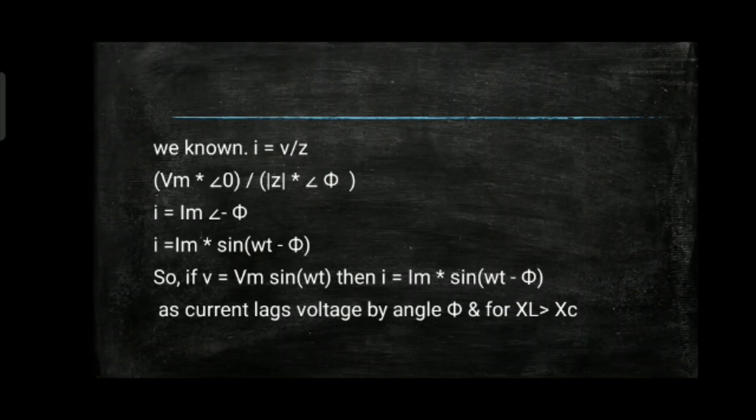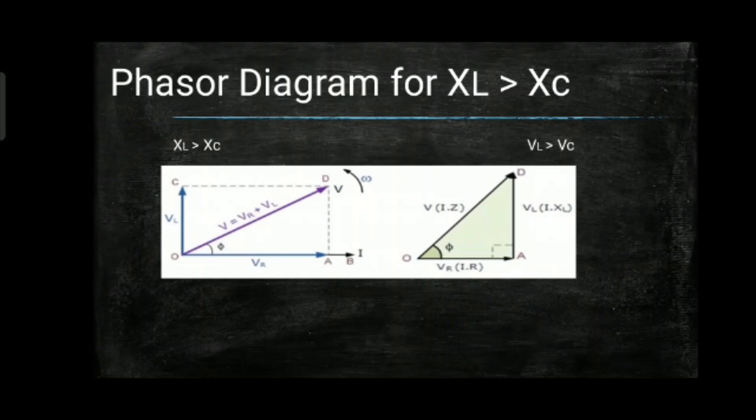The equation of current: I = V/Z = Vm∠0 / |Z|∠φ, giving I = Im∠−φ, i.e. i = Im sin(ωt − φ). So if V = Vm sin(ωt), then I = Im sin(ωt − φ), meaning current lags voltage by angle φ when XL is greater than XC. Below is the phasor diagram for XL greater than XC.